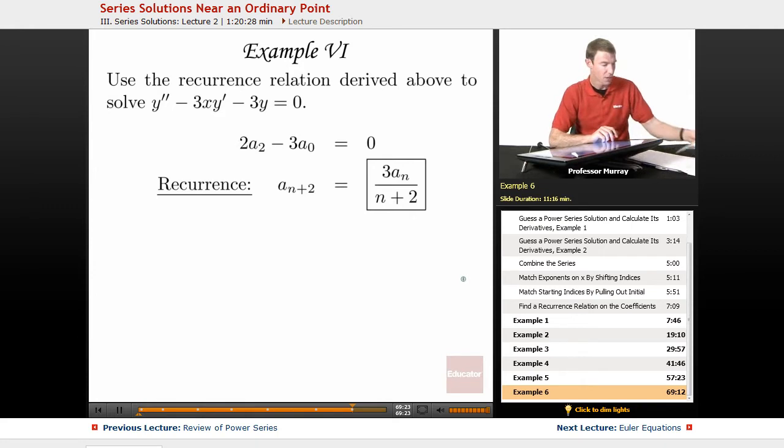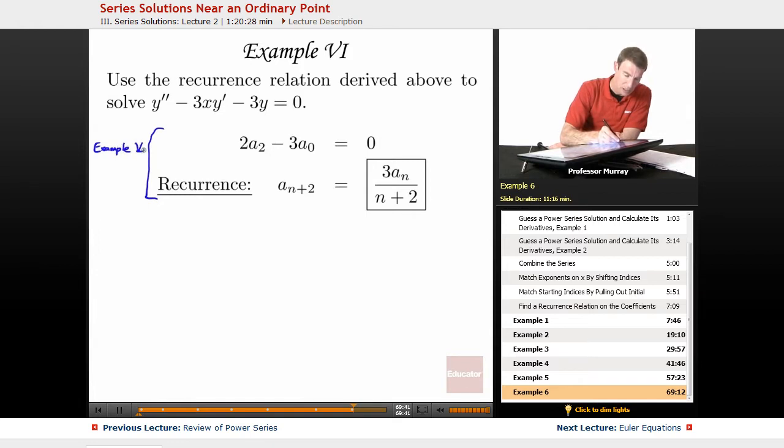So remember, we ended up with 2A2 minus 3A0 equals zero, and then we have this recurrence relation. Let me remind you that all of this is stuff we figured out back in example five. So if you took a break and you're just coming back, you might want to go back and check example five. That'll show you where these two formulas come from. They aren't supposed to be a big mystery, but we definitely aren't working them out right now.